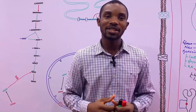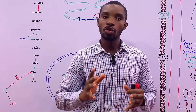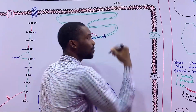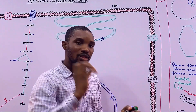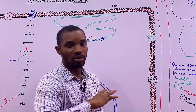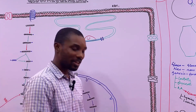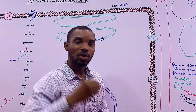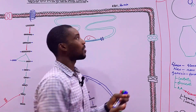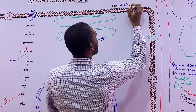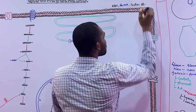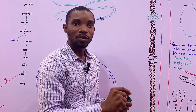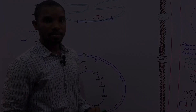Gluconeogenesis occurs in the liver and the kidney. These two organs undergo gluconeogenesis to maintain a steady glucose level. Glucose is responsible for energy especially in red blood cells, which depend solely on glycolysis. RBCs don't have mitochondria, so they don't undergo pyruvate oxidation or the Krebs cycle. The brain also requires glucose constantly, though it can also use ketone bodies. Other tissues like testes also rely on steady glucose supply.